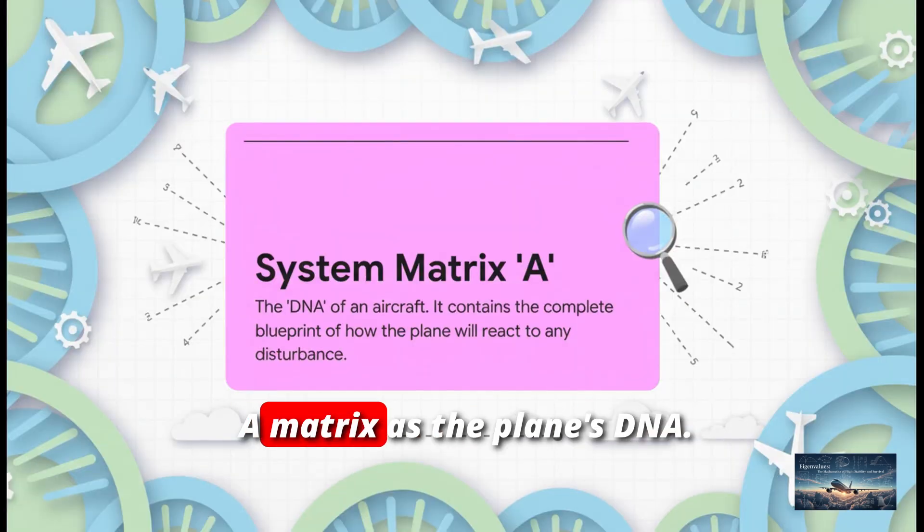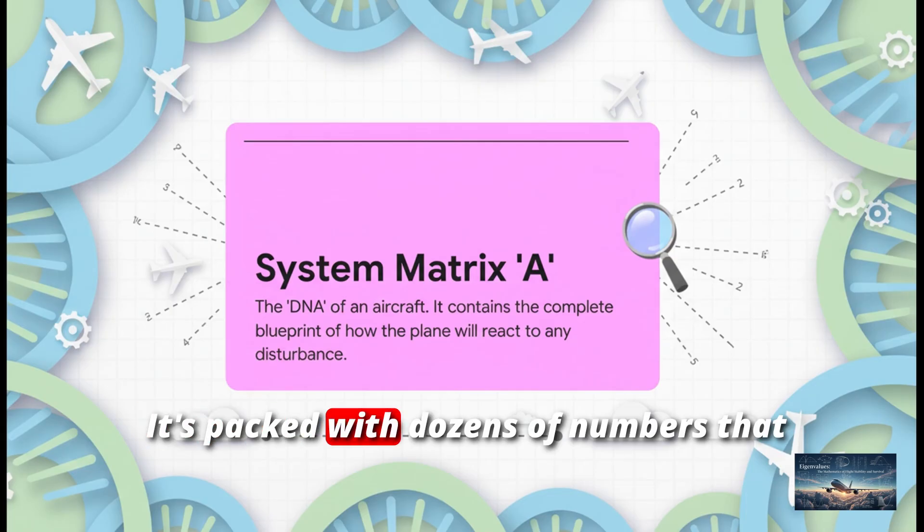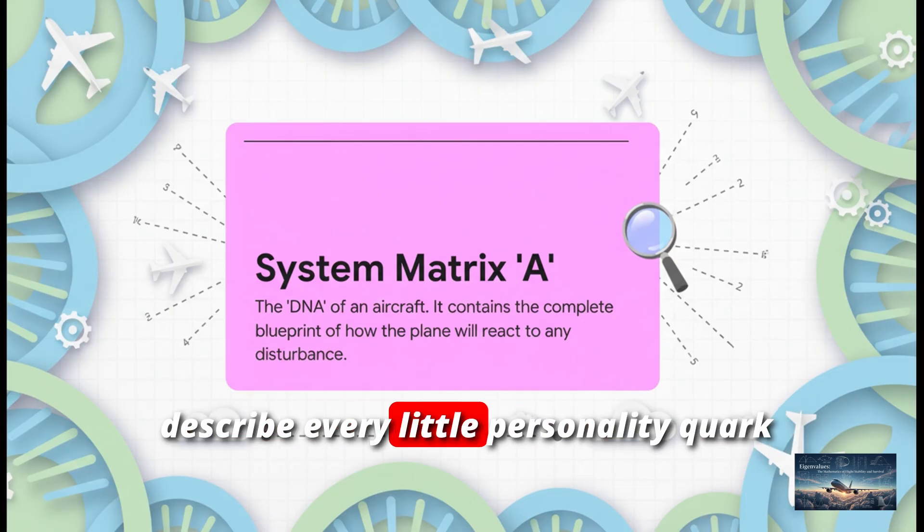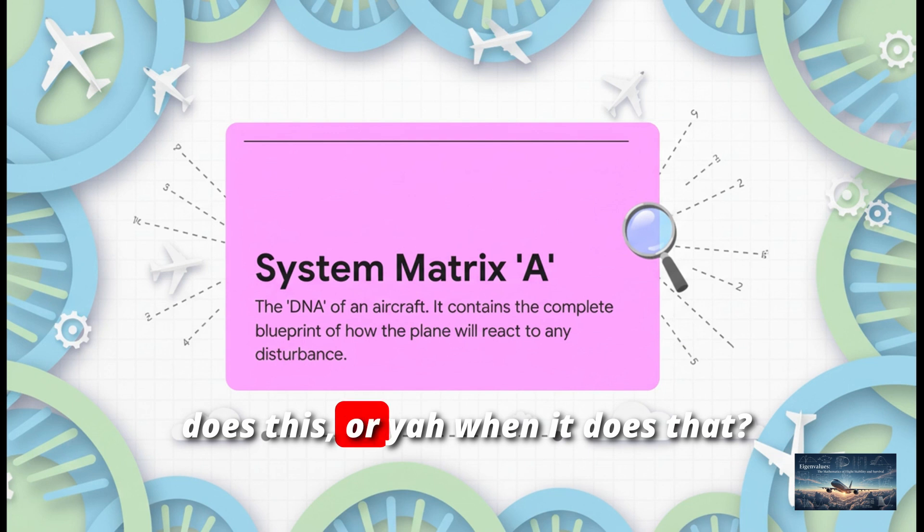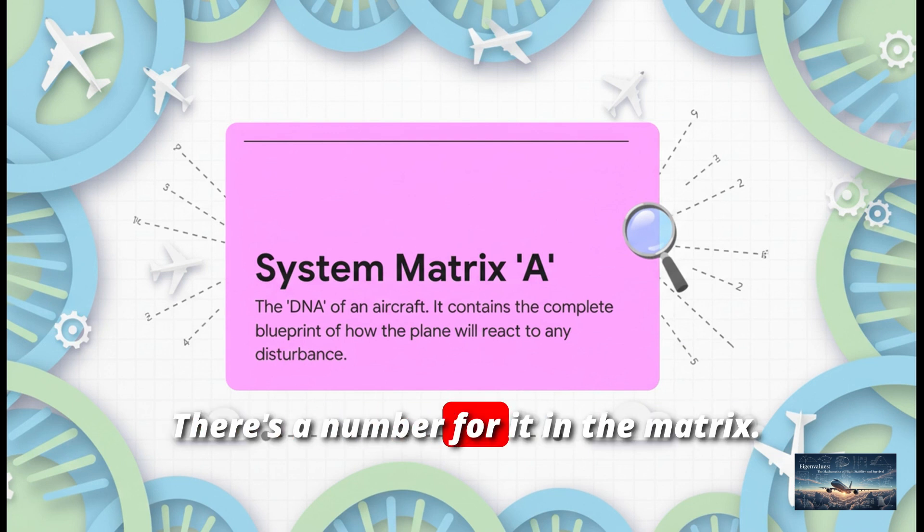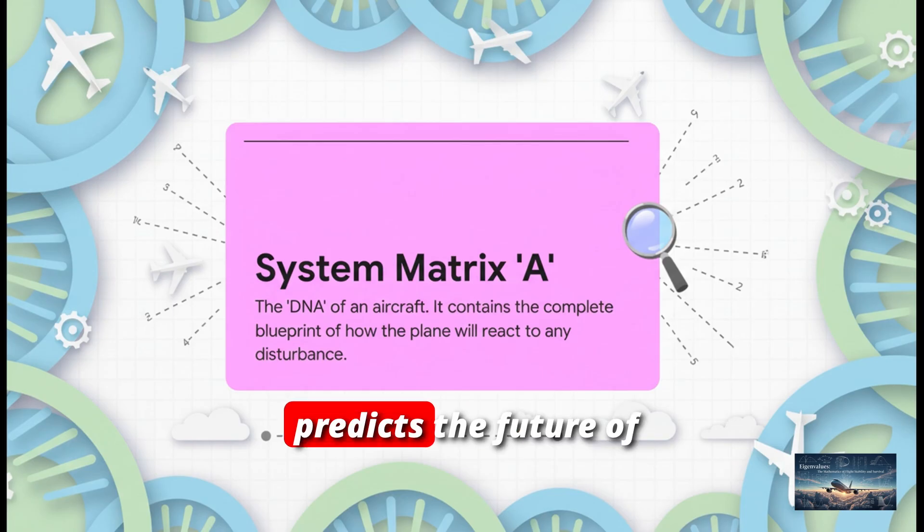Yeah, you can think of this A matrix as the plane's DNA. It's packed with dozens of numbers that describe every little personality quirk of the aircraft. How much does it want to pitch up when it does this? Or yaw when it does that? There's a number for it in the matrix. And buried inside this DNA is a secret code that basically predicts the future of the flight.